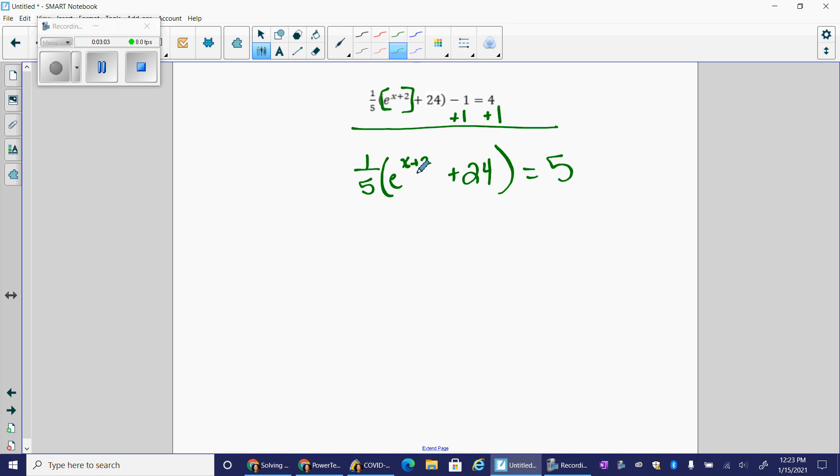Now I'm still trying to get to this x value, so I've got to get into those parentheses. So I'm going to multiply by five on each side. One fifth times five is one. So now I have e to the x plus two plus 24 equals 25.